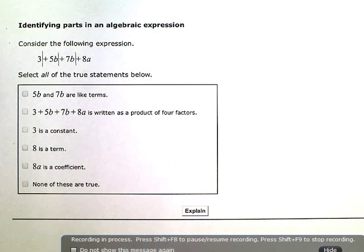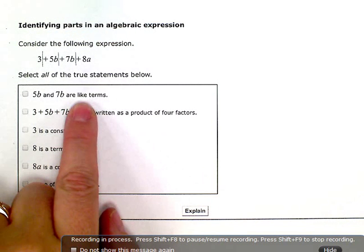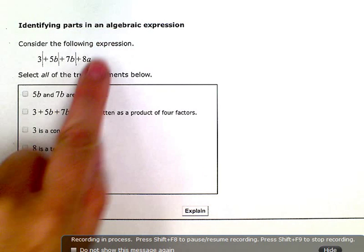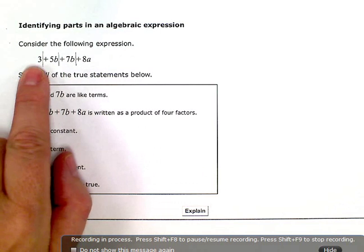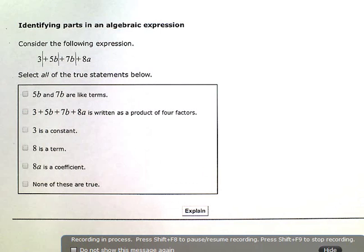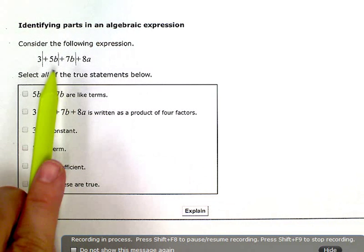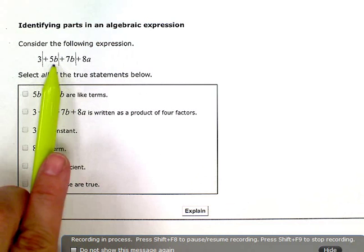I want like terms, which means that I'm looking at the variables attached - the variable parts. And if any terms have the same variables with the same exponents, then they're like terms. So I can see here that these two terms both have a b.